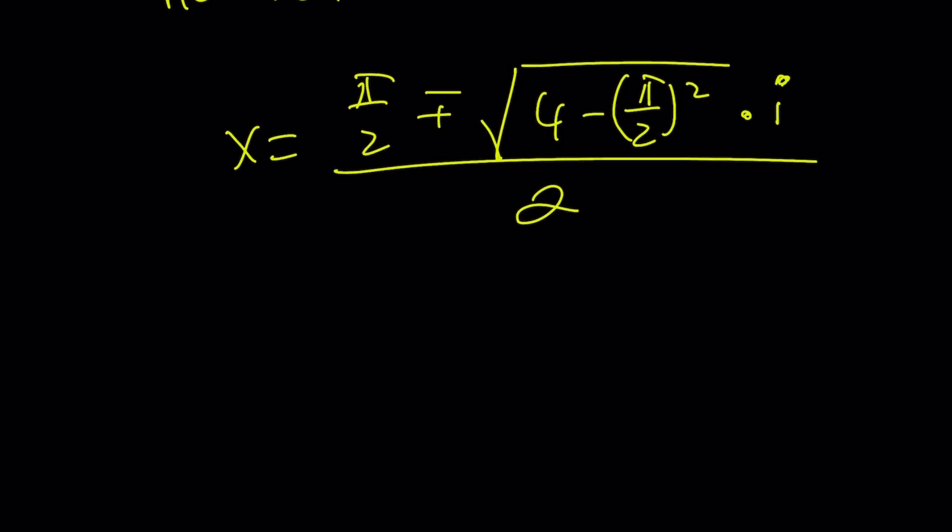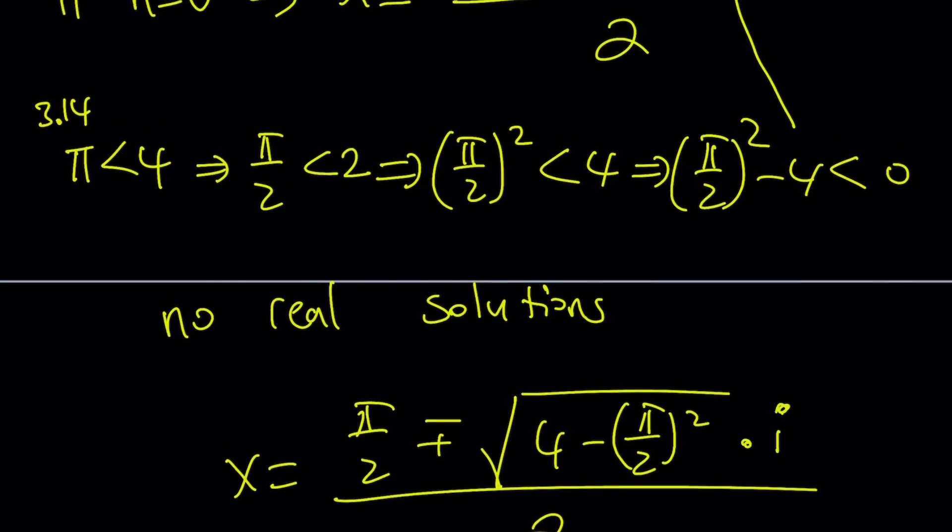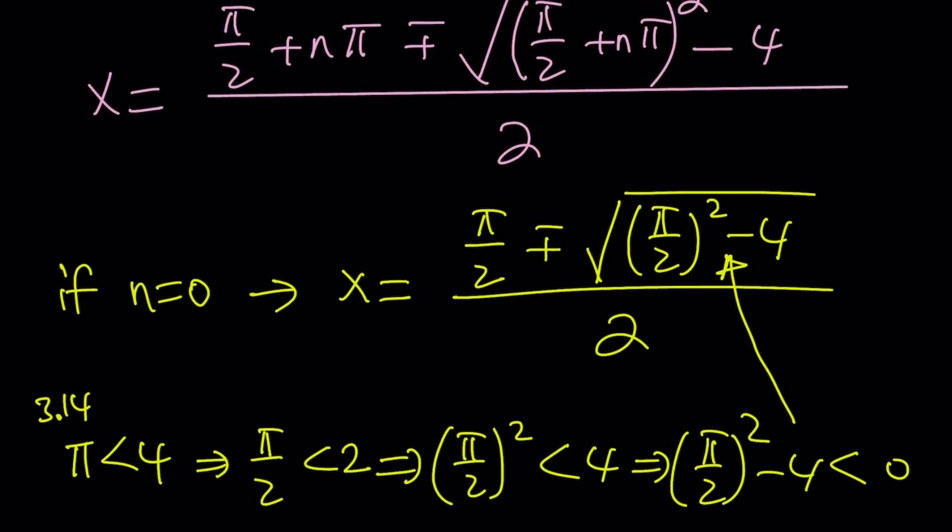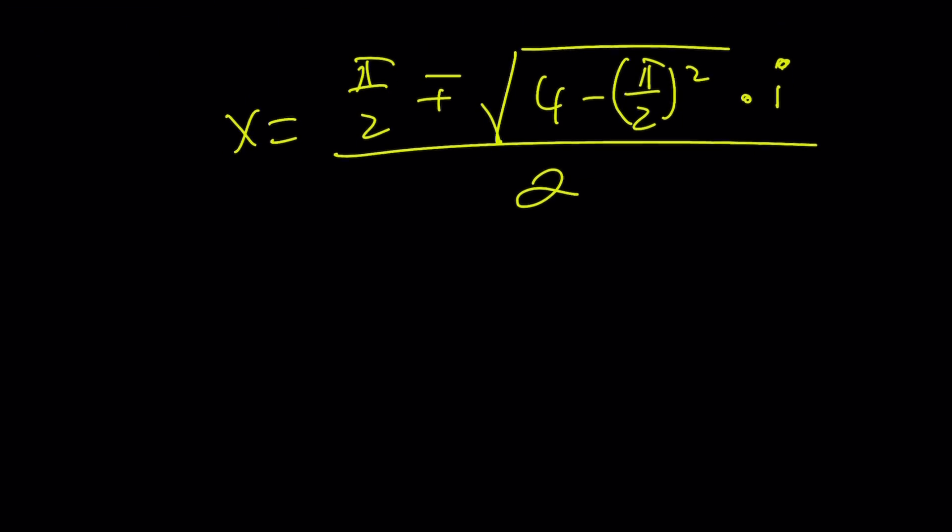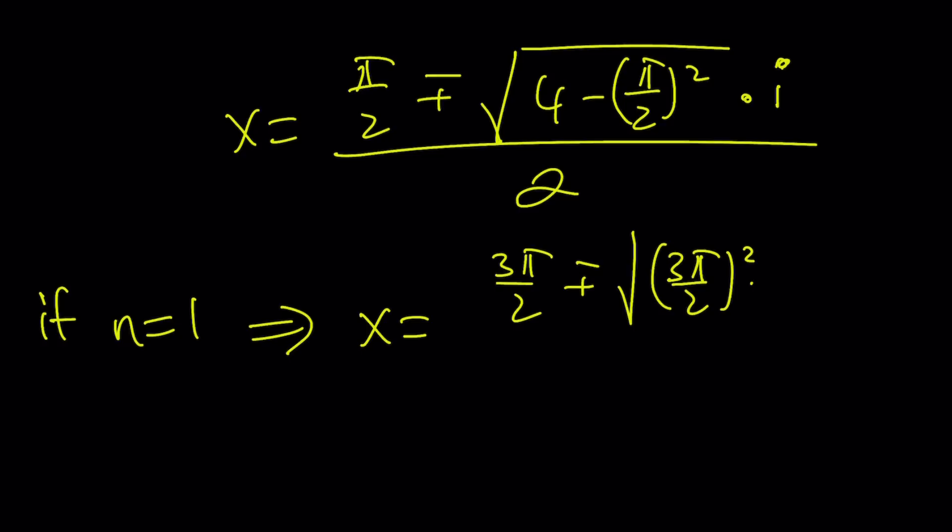But what if n does not equal 0? Any other integer, I think, it should be good. Right? If you think about it, like if n is equal to negative 1, pi over 2 minus pi, well that's not going to be good either. So anyways, for some values you don't have real solutions. Sometimes you do have real solutions. Let me also give you another real special case. If n is equal to 1, then x is going to be 3 pi over 2 plus minus the square root of 3 pi over 2 squared minus 4, which is definitely positive, over 2.